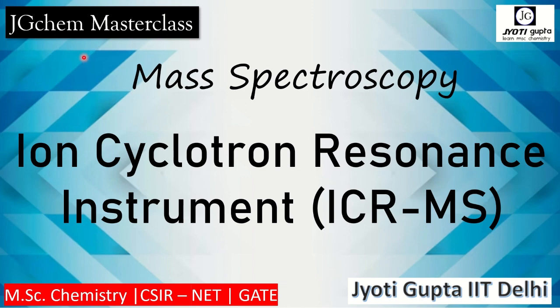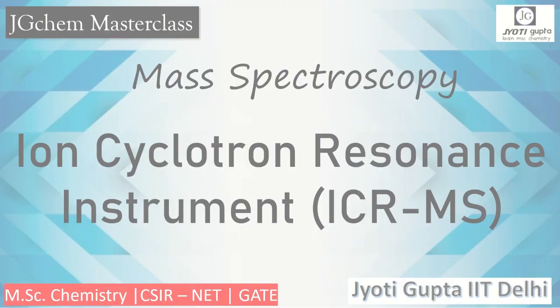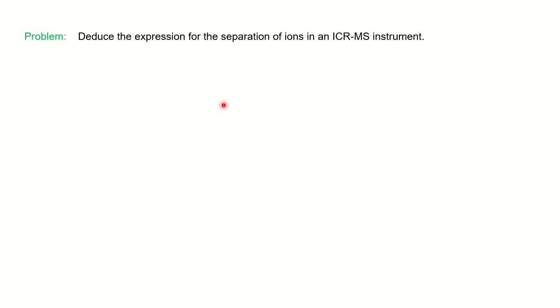Hello everyone, welcome to JGK Masterclass. In today's video we are going to learn about Ion Cyclotron Resonance instrument called ICR-MS under mass spectroscopy. The question we are going to discuss is taken from the MSc previous year question paper. The question is: derive the expression for the separation of ions in an ICR-MS instrument.